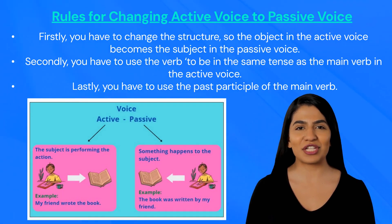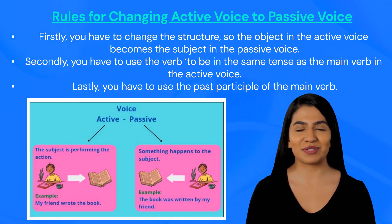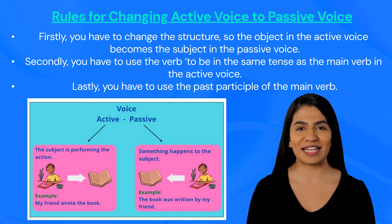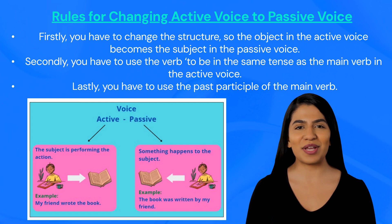Firstly, you have to change the structure, so the object in the active voice becomes the subject in the passive voice. Secondly, you have to use the verb 'to be' in the same tense as the main verb in the active voice. Lastly, you have to use the past participle of the main verb. Examples are in the image.